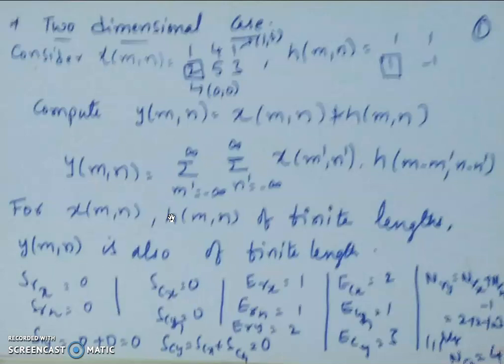In the previous class we derived the relation between the input and the output for an LSI two-dimensional system. The relation between the input and output is y[m,n] = x[m,n] convolved with h[m,n], where h[m,n] is the impulse response of the given LSI two-dimensional system.